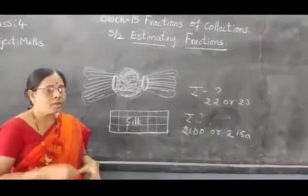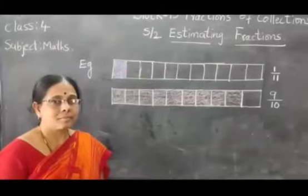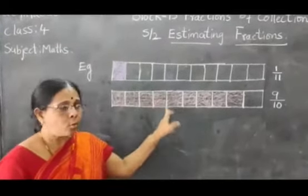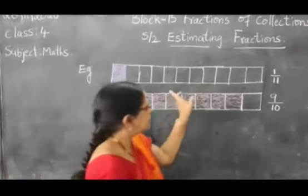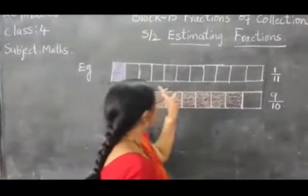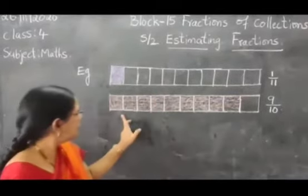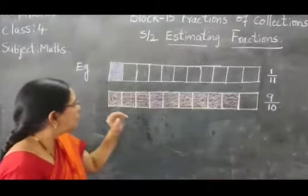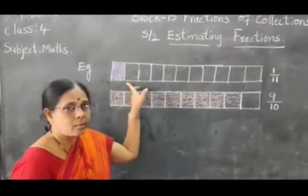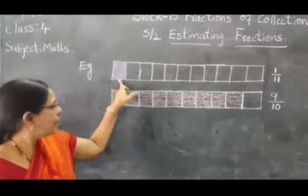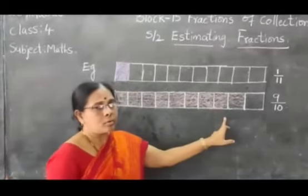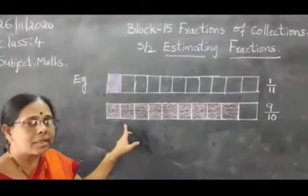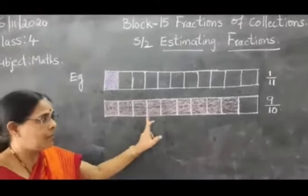Now I will show you in fraction how we will estimate. For example, in fraction I have drawn here 2 chocolate bars children. This is 1 chocolate bar, 11 parts are there, 1 part I shaded, so that is 1 by 11. In the 2nd chocolate bar 9 by 10, 10 parts are there, 9 I shaded. So I want to give in this chocolate bar 1 piece, and in 2nd bar I want to give 9 pieces. Which one you select children? First one or 2nd one? Obviously you will take 2nd chocolate, 9 pieces.